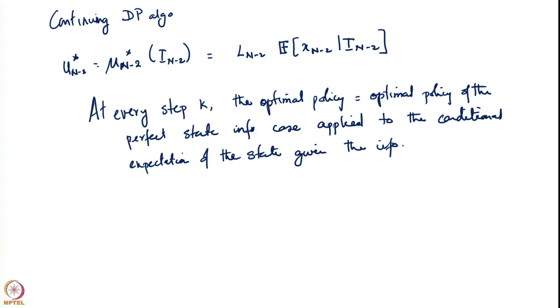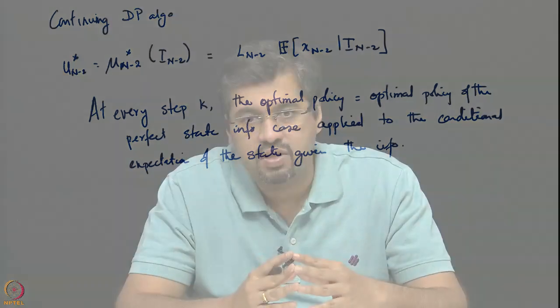What we have shown so far is a landmark result. It has shown that essentially the way to proceed with a problem where we do not have perfect state information is to make the best estimate of the state, assume that was the true state, and then apply the control that we would have applied if that were the true state. That is the form of the optimal policy.